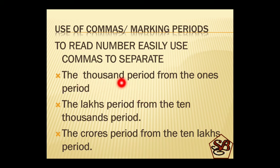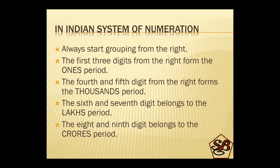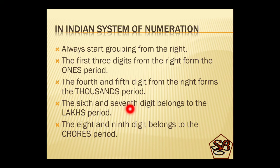This can be made even easier by using commas or marking the periods. We separate the thousands period from the ones period, the lakhs period from the thousands period, and the crores period from the ten lakhs period by putting a comma. Always start grouping from the right side. The first three digits from the right form the ones period. The fourth and fifth digit form the thousands period. The sixth and seventh digit belong to the lakhs period. The eighth and ninth digit belong to the crores period.